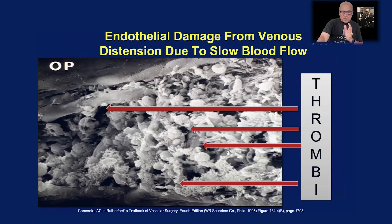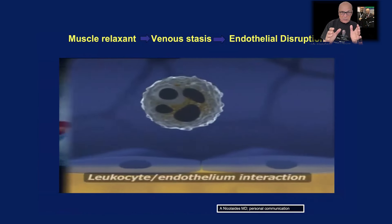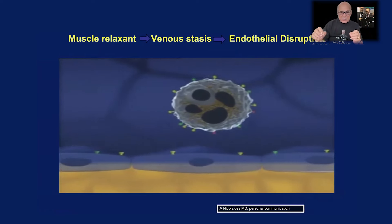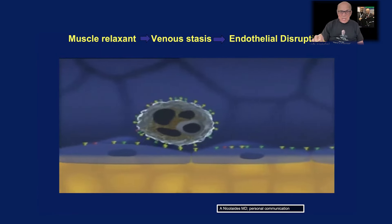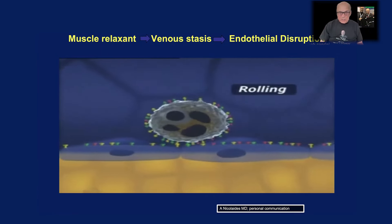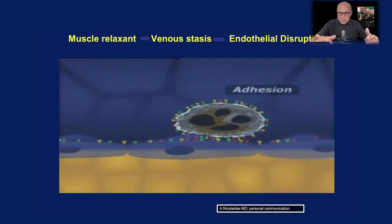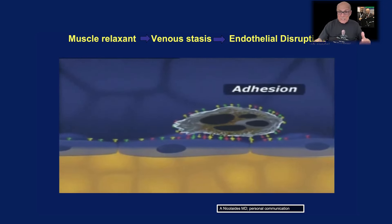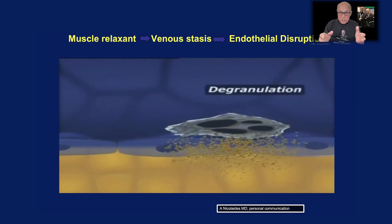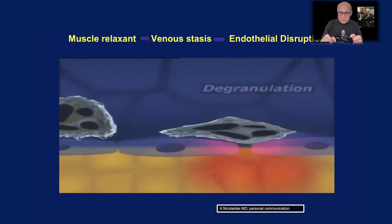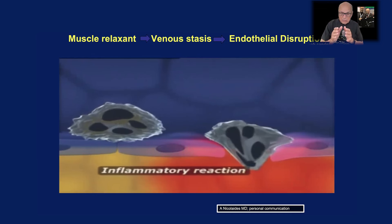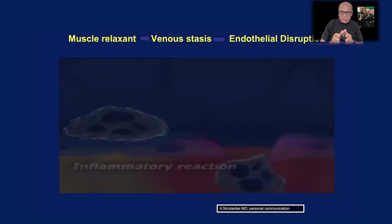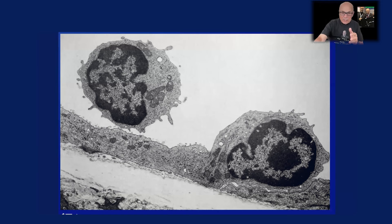The next picture shows what happens to the white cells when the blood flow slows down. They change into adhesion molecules. See how the picture darkens? These adhesion molecules land on the surface of the capillary endothelium — where oxygen, nutrients, and waste products are all exchanged. Finally, the adhesion molecule will stop. An inflammatory reaction occurs. Granules are extruded, and that ruins the wall of the capillary. Now the capillary can no longer function, transferring nutrients and oxygen.